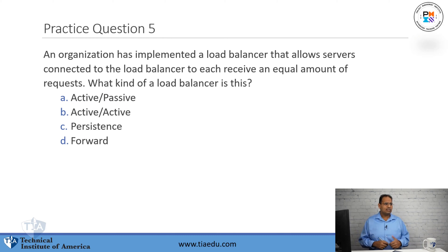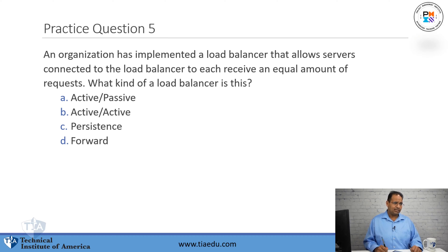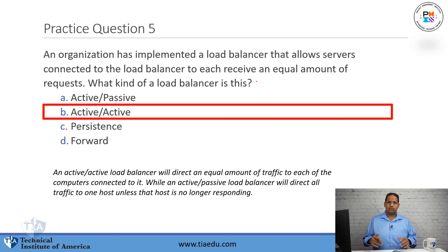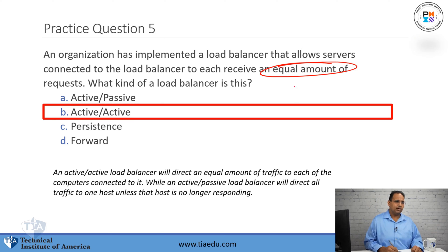Question number five: An organization has implemented a load balancer that allows servers connected to it to each receive an equal amount of requests. What kind of load balancer is this? A. Active-passive. B. Active-active. C. Persistent. D. Forward. The answer is active-active. An active-active configuration is done in a cluster where the load balancer distributes traffic equally — giving each server the same number of requests.